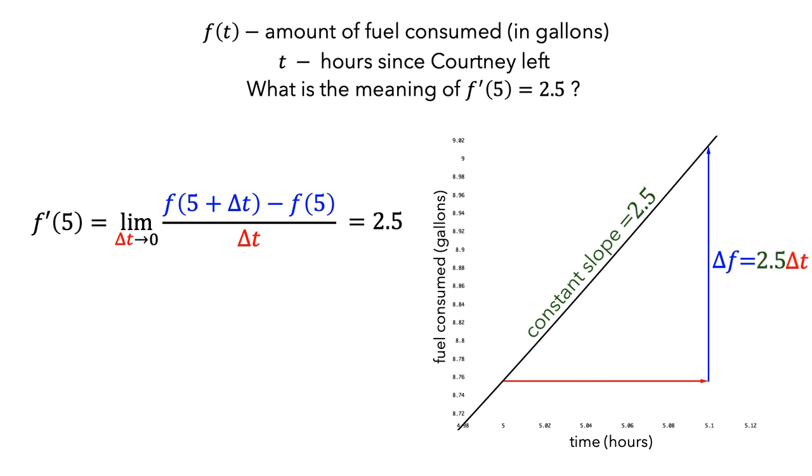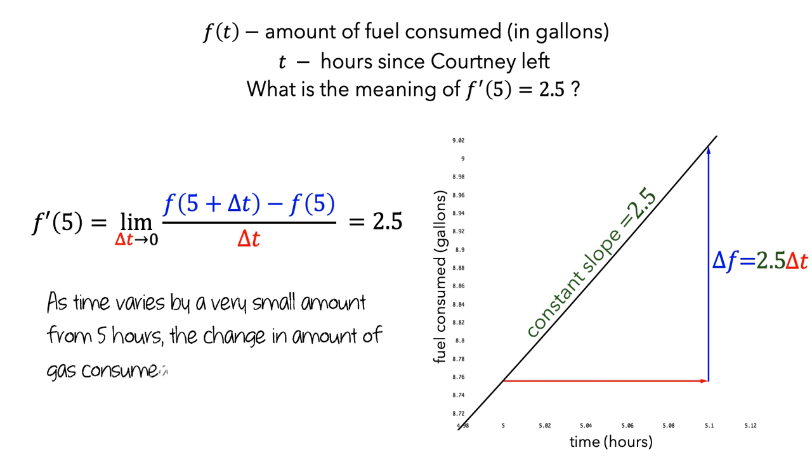We can see that this constant slope corresponds to a constant rate for fuel consumed per hour. So we can explain what f'(5) equals 2.5 means in the following way. As time varies by a very small amount from 5 hours, the change in the amount of gas consumed from f(5) is 2.5 times as much as the change in time.